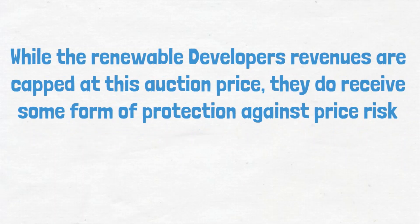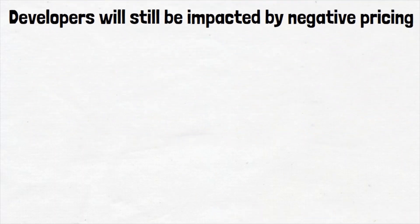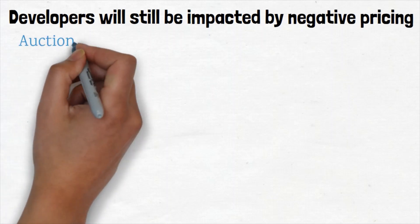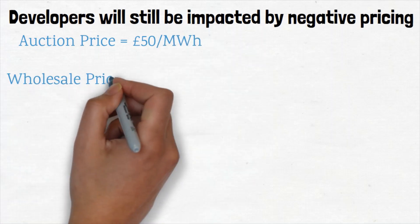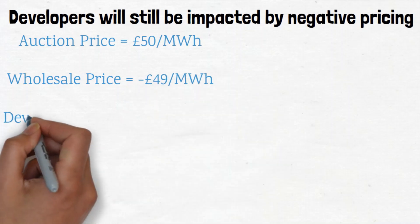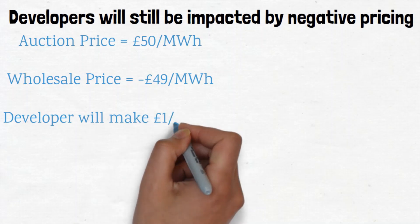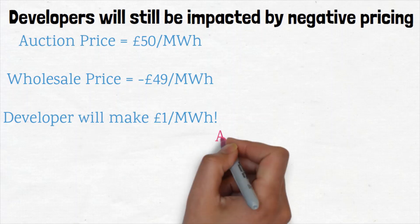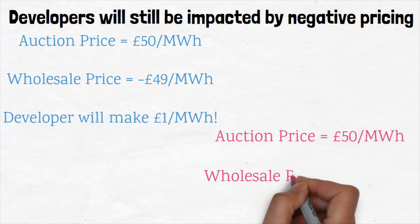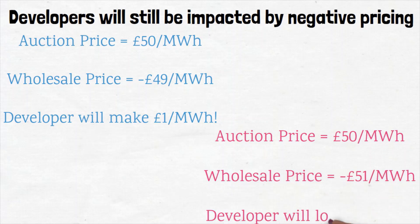Developers will still be impacted by negative pricing, however. As the revenue is capped at the auction price, the government will only pay them this value. For example, if the auction price cleared at £50 per megawatt hour, and during the 15-year contract some of the half-hourly prices reach minus £49 per megawatt hour, the developer will only make £1 per megawatt hour — the difference between the two prices. If wholesale prices reach minus £51 per megawatt hour, then the developer will run at a loss of £1 per megawatt hour.